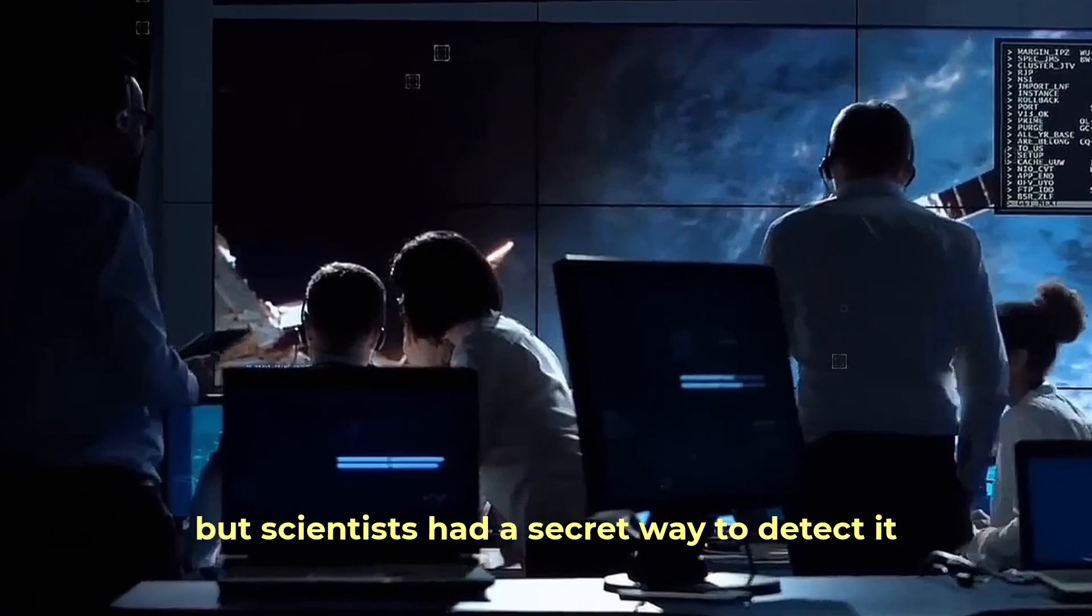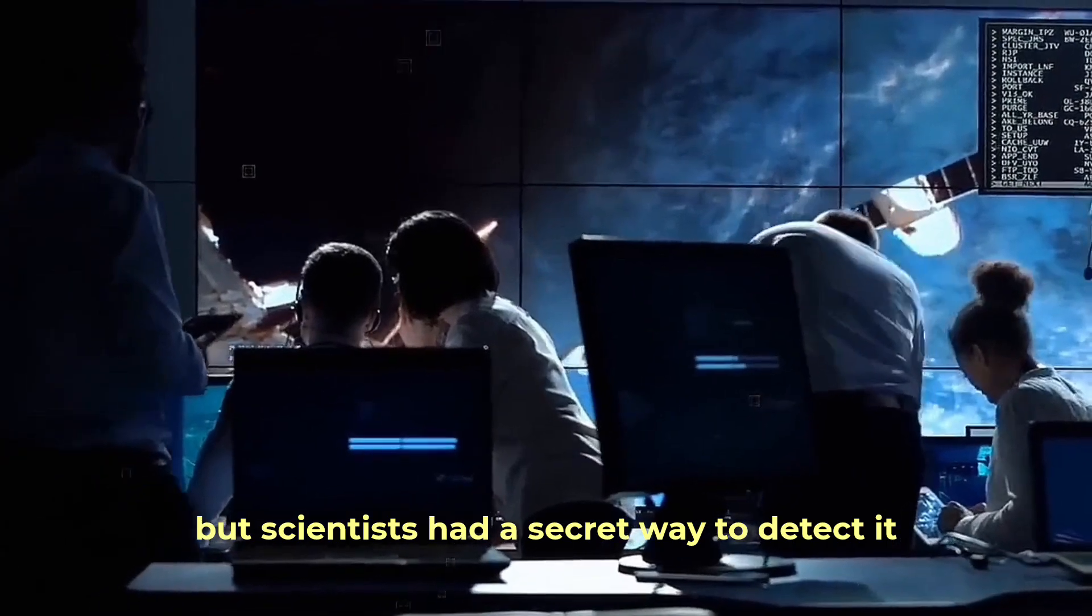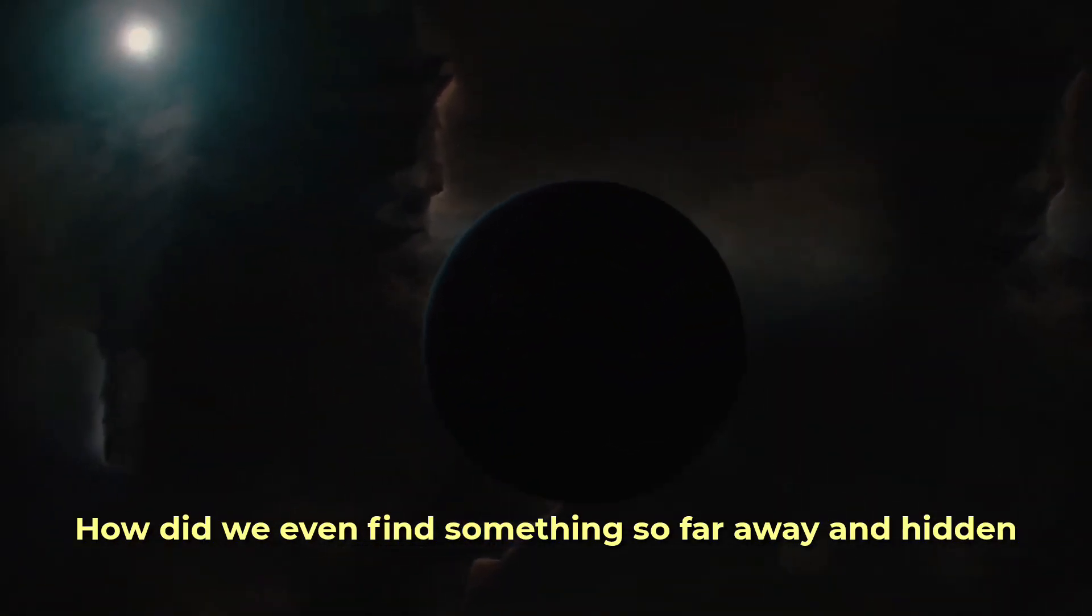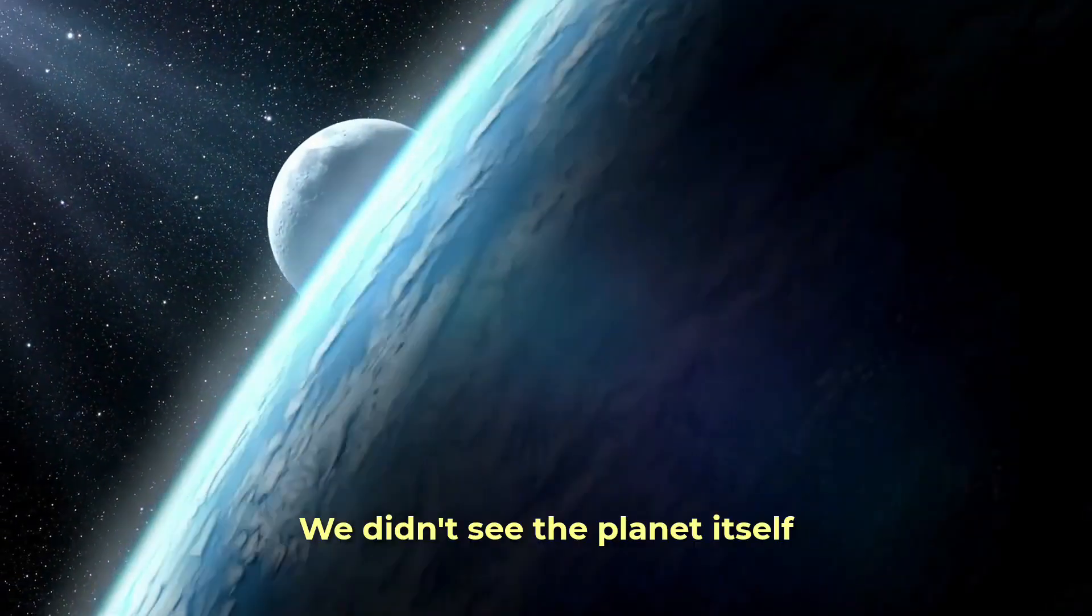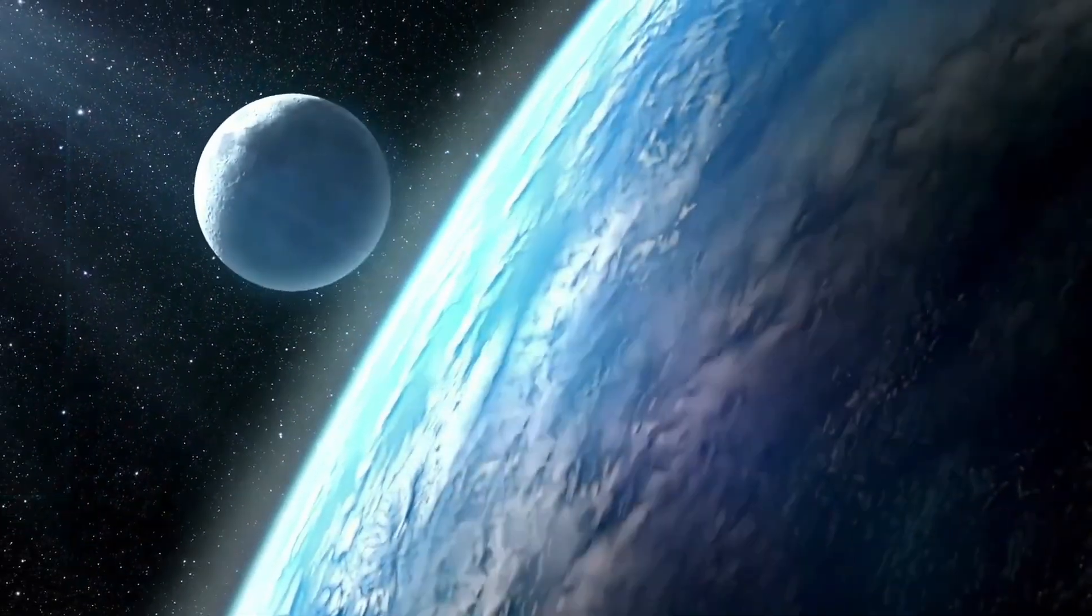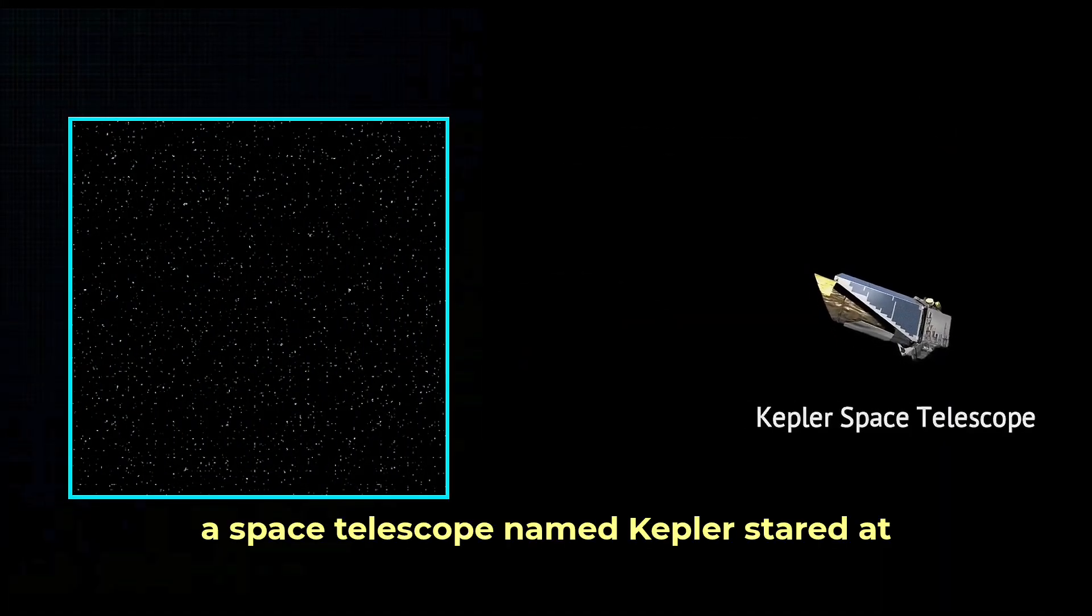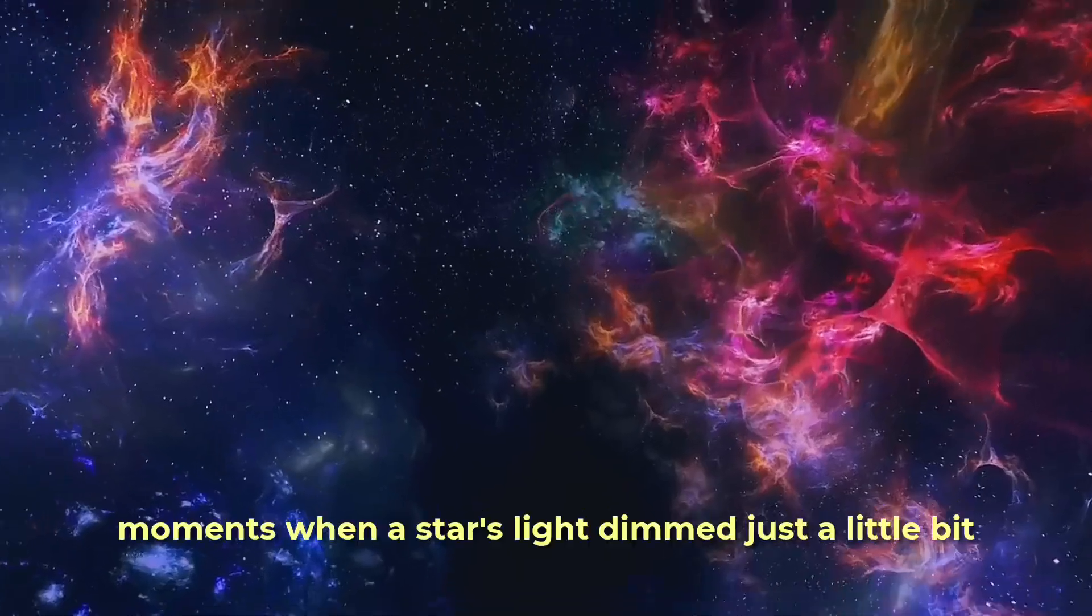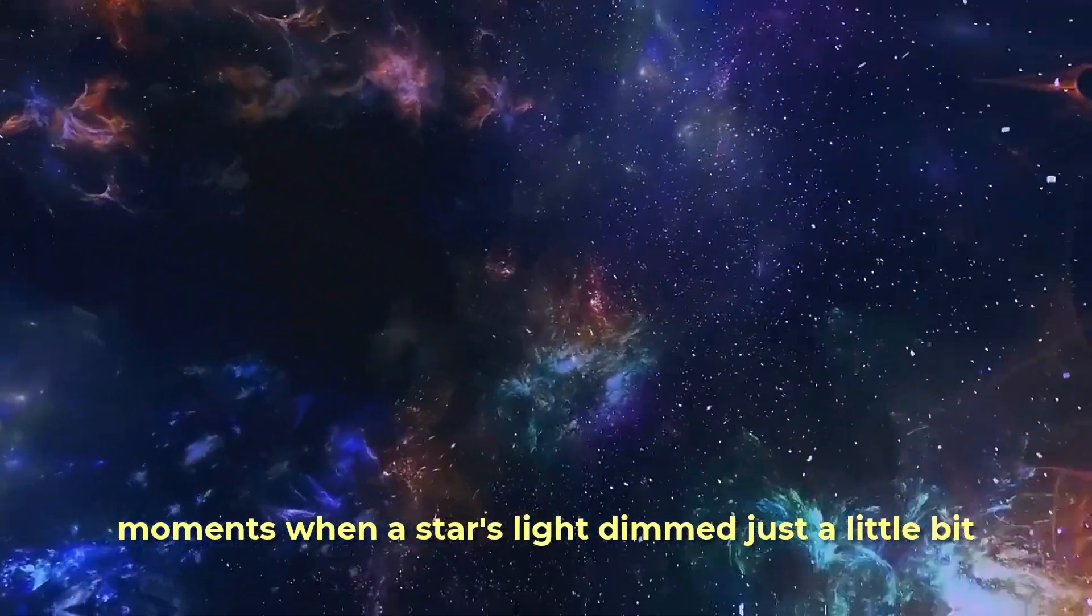It seemed impossible, but scientists had a secret way to detect it. How did we even find something so far away and hidden? We didn't see the planet itself. In 2015, a space telescope named Kepler stared at lots of stars for a long time. It watched for tiny winks, moments when a star's light dimmed just a little bit.